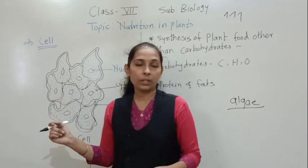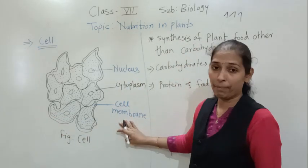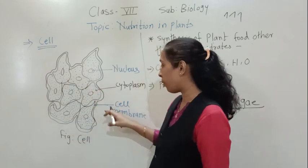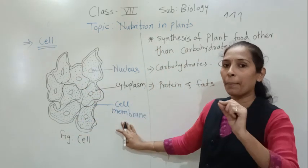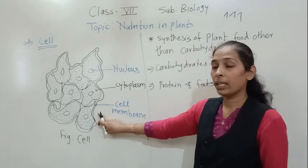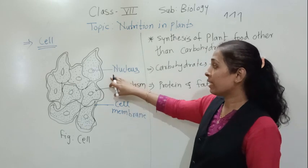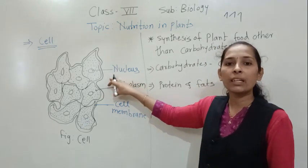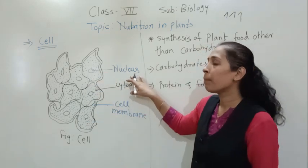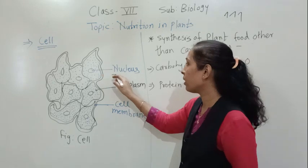Let's see the different parts or components of the cell. First, we are going to see about the cell membrane. This cell has a thin outer boundary, and that thin outer boundary is called the cell membrane. Next, in the cell, we can see a centrally located spherical structure, and that structure is called the nucleus. All the cell's work is controlled by this nucleus.